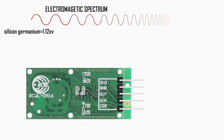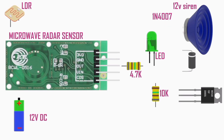In the experiment, we are going to set up a motion sensor that triggers an alarm when motion is detected, using the microwave radar sensor module RCWL-0516. An LDR is used so that it can work in the dark or at night only. A transistor helps switch the circuit. We also have a siren, diode, resistor, and LED.